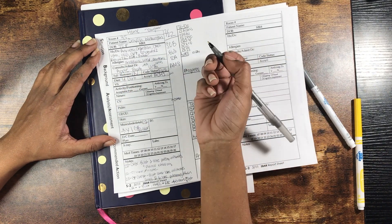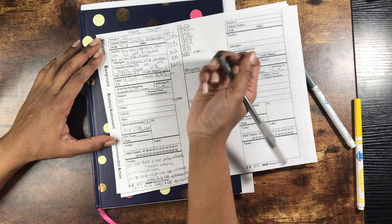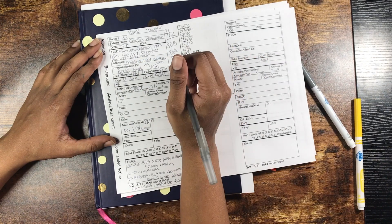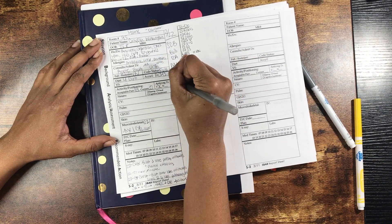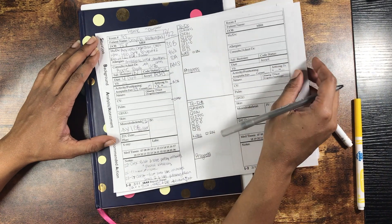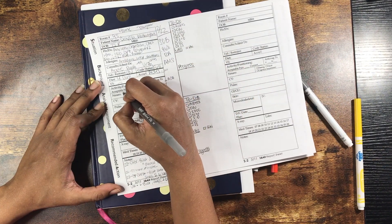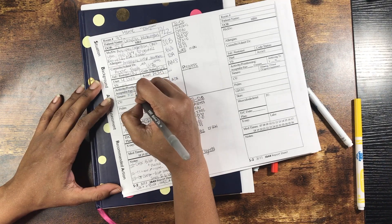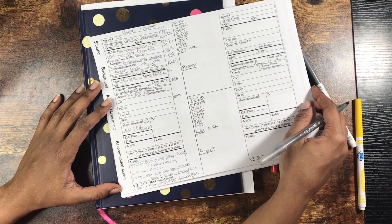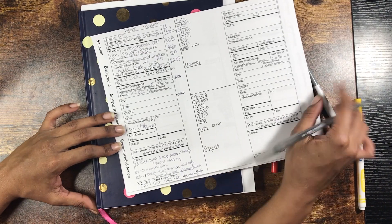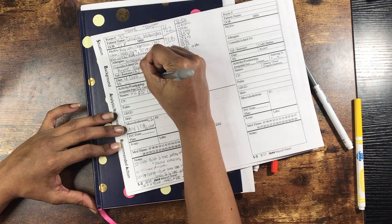Her vital signs are stable. Her acceptable pain is 9 out of 9 and currently rates pain at a zero. She takes aspirin as an anticoagulant. I would say she's alert times two currently, not to date or situation. And actually, I forgot to mention that her temp is slightly elevated.